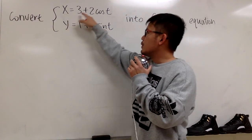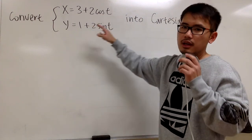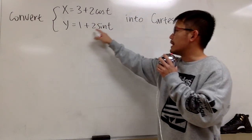We have x is equal to 3 plus 2 cosine t, and y is equal to 1 plus 2 sine t.